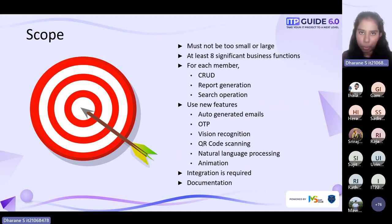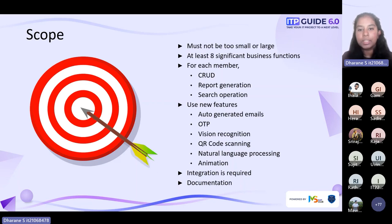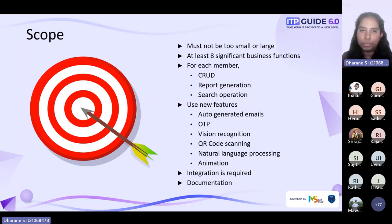Looking at project scope, your project must not be too small or too large to handle within a six-month period. It should consist of at least eight significant business functions, one for each member. In each business function, there should be a CRUD operation, report generation, and a search operation — these three features are compulsory. But you don't have to stop there. You can always add more features like auto-generated emails, OTP, image recognition, QR code scanning, natural language processing, and animation. You can use libraries already available in your chosen technologies. Including these features will make your project stand out from others.